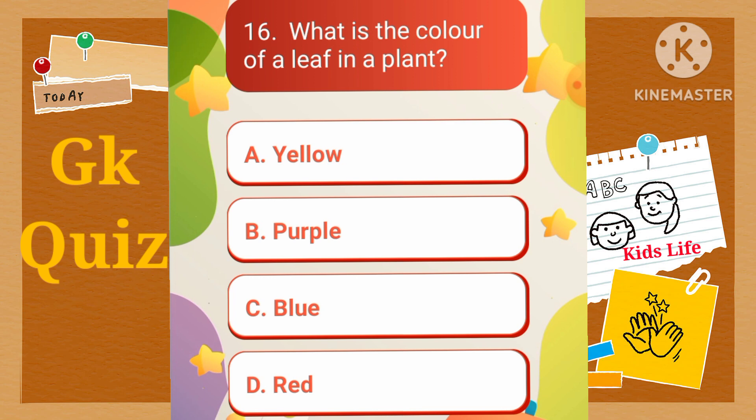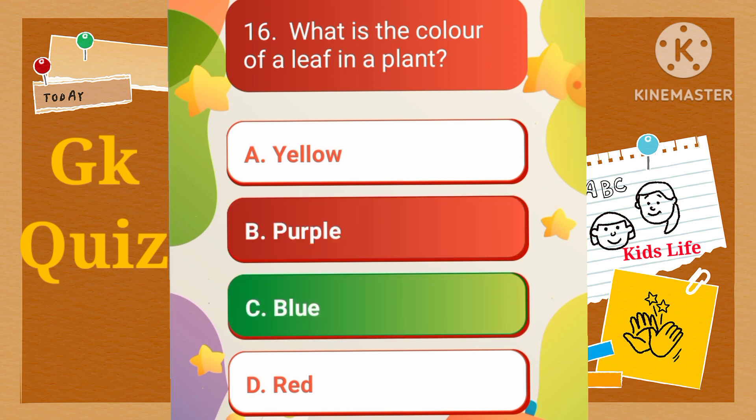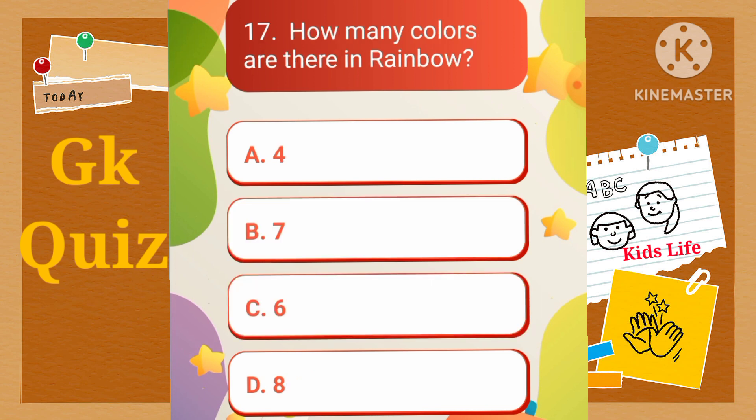What is the color of a leaf in a plant? A) Yellow, B) Purple, C) Blue, D) Red. How many colors are there in a rainbow? A) Four, B) Seven, C) Six, D) Eight.